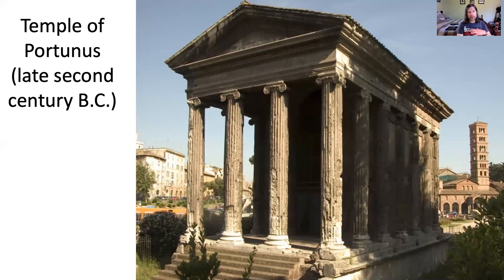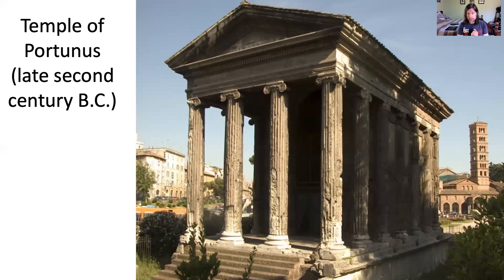I've organized my presentation of Roman art and architecture under three main headings, and the three key words all begin with P. What is distinctive about Roman art and architecture? Three P's come to mind. The first is that Roman art is practical. Second, as I've already suggested, it is political. And third, Roman art and architecture tends to be pious — pious in the sense of pious Aeneas. Piety is devotion to the gods, but also devotion to one's family, to one's ancestors, and so on.